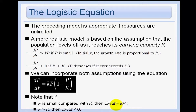We can incorporate both assumptions using the equation dp/dt = kp(1 - p/K). Note that if p is small compared with K, then p/K is close to 0, so we just get dp/dt ≈ kp. But if p is huge compared with K, then (1 - p/K) becomes a large negative number, so dp/dt is negative — meaning the population decreases when it exceeds the carrying capacity K.